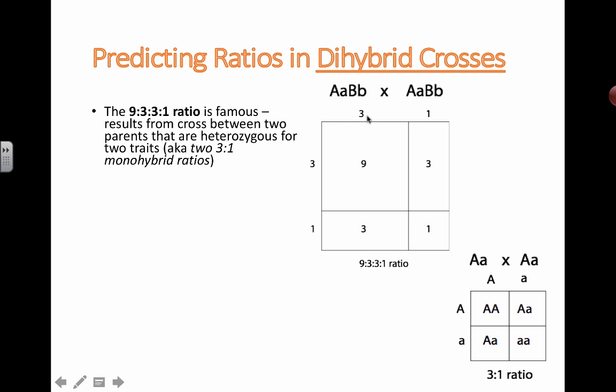So where do we get this 3 to 1 ratio? Well that comes from this basic Punnett square that you should all be familiar with. If the parents are heterozygous and we're only looking at one trait, so one parent is big A little a and the other parent is big A little a.